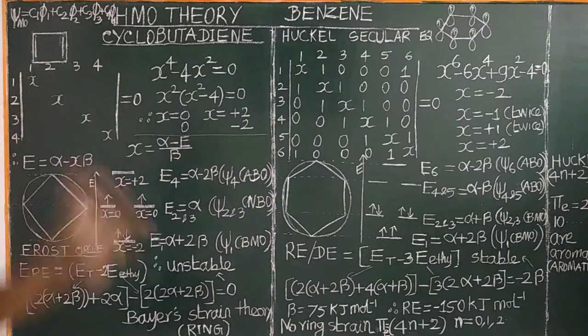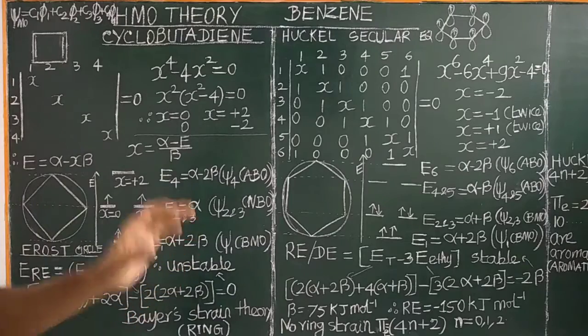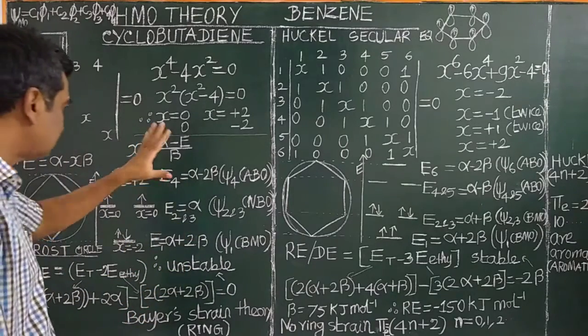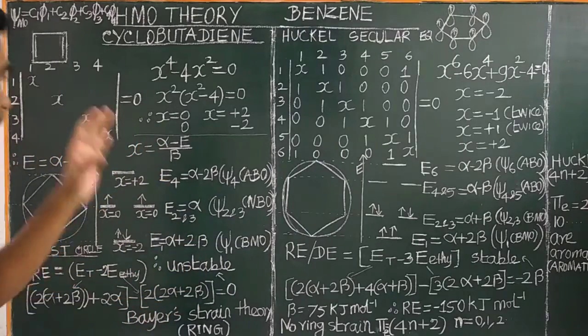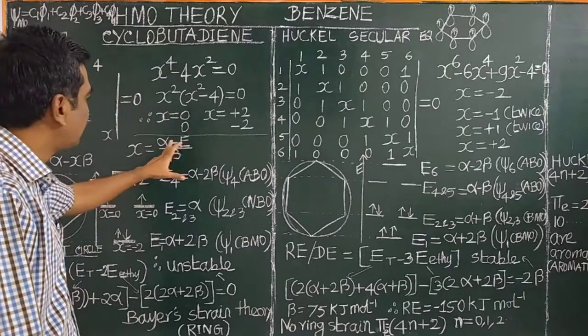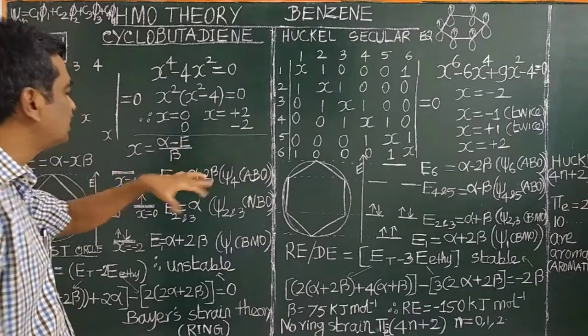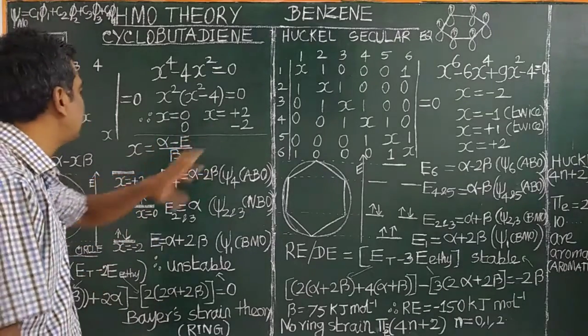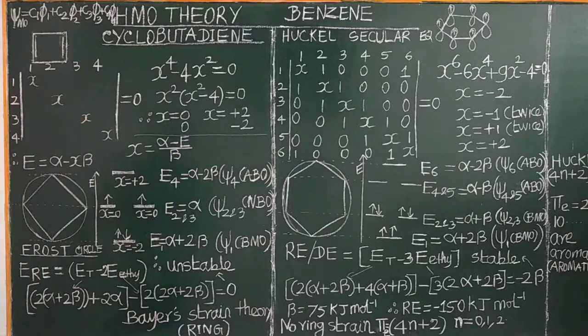What is x? What is alpha? What is E? What is beta? Alpha is the Coulomb integral, beta is the resonance integral, and E is the energy.